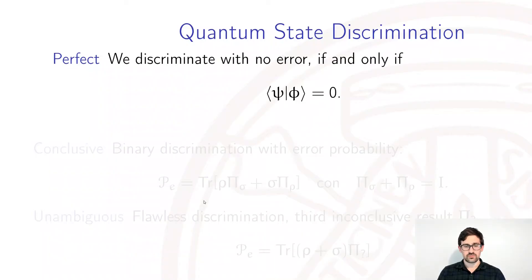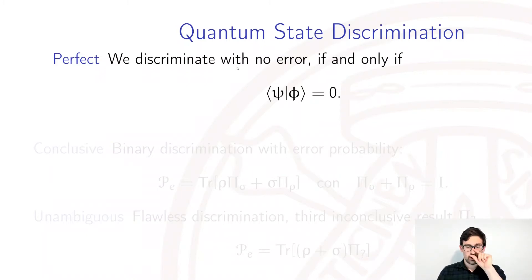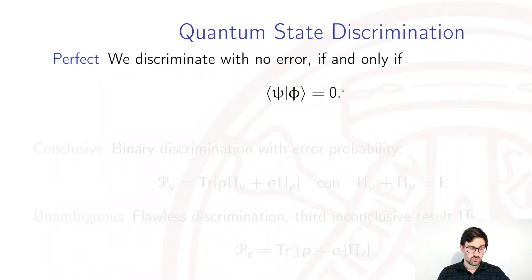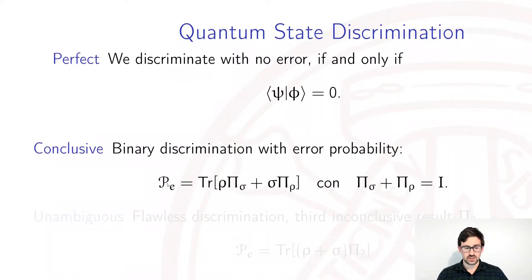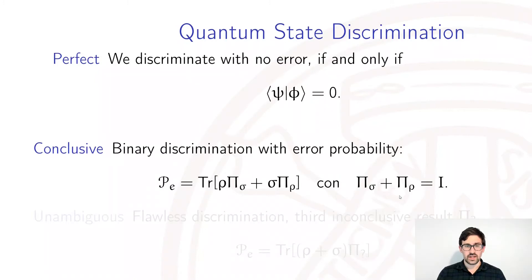For quantum systems, we have three possible protocols for state discrimination. The first is perfect discrimination, where we require the protocol to distinguish between the two states with no error. We know it is possible if and only if the two states are orthogonal. If we release that strong constraint, we must take account of some kind of error. Conclusive discrimination is a binary discrimination with two results described by a POVM — two positive operators that sum to the identity, pi_sigma and pi_rho — and the error probability is that of measuring sigma when the state was rho, and measuring rho when the state was sigma.